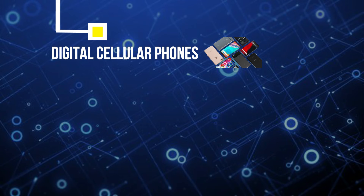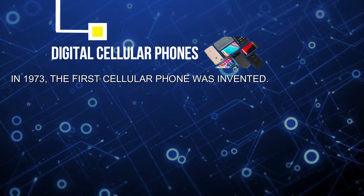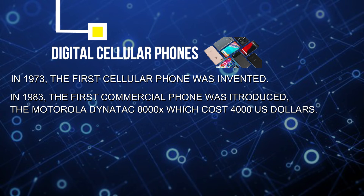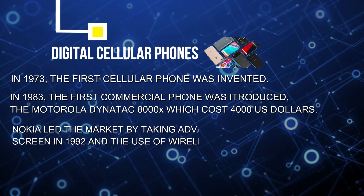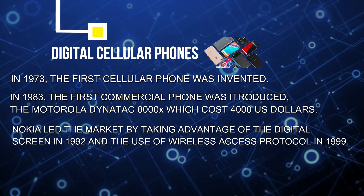Moving to the invention that everyone uses every day — digital cellular phones, also known as smartphones or mobile phones. Digital cellular phones were first created in 1973, weighing 2 kg and taking 10 hours to charge. In 1983, the first commercial mobile phone, the Motorola DynaTAC 8000, was made public, costing 4,000 US dollars. It became popular and developed a digital screen, and Nokia, taking this advantage, created the Nokia 1011 in 1992.